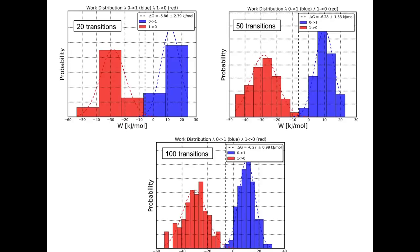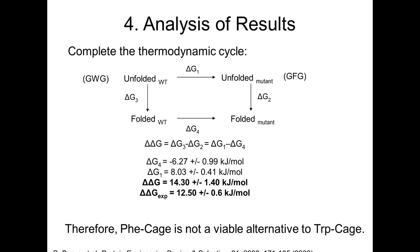Using our estimate of negative 6.27 kilojoules per mole, we can now complete the thermodynamic cycle. As Bert explained, we use GXG tripeptide mimics — where G is glycine and X is the amino acid of interest — to simulate the unfolded state, running the same alchemical simulation. Adding up all values, we estimate that the delta delta G for the phenylalanine mutation on the folding free energy is 14.3 kilojoules per mole. The experimental value for this mutation is 12.5 kilojoules per mole, so we are happy to see good agreement.